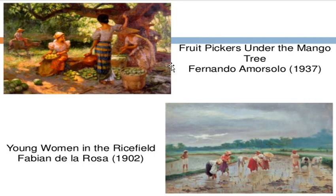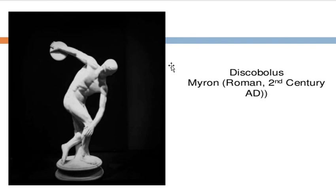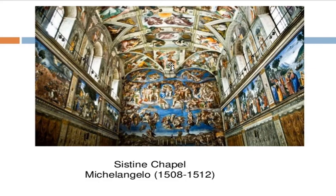We also have the Discobolus by Myron, from the Roman 2nd century AD. As you can see, it's from the Roman period — the source of the subject is from the Roman Empire or the Roman Judeo-Christian tradition. We also have the Sistine Chapel by Michelangelo, painted 1508 to 1512. The type is religious, and the source is religious in nature.